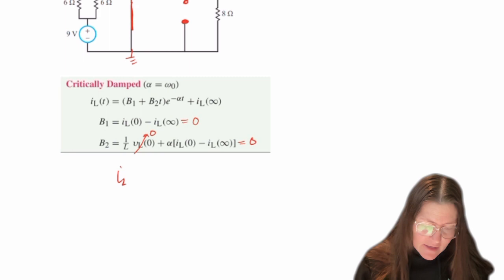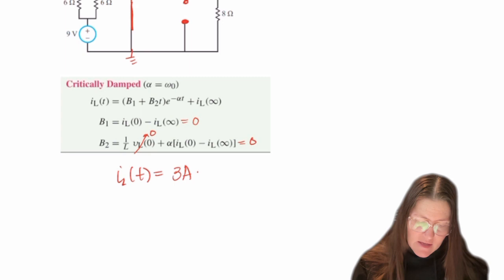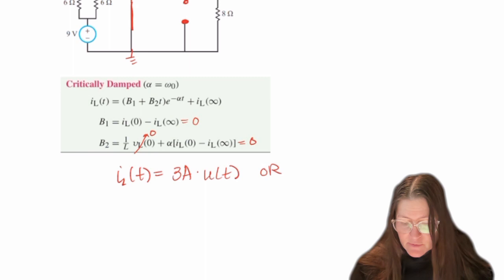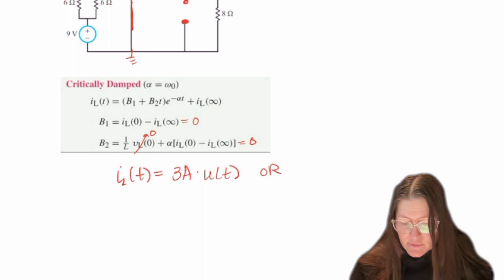So that makes this equation easy, that IL of t is always just going to be 3 amps. And then again, I put the U of t, or you can say it's 3 amps for t greater than or equal to zero. So those mean the same thing. So that is my solution. So that is my solution for this is just 3 amps.